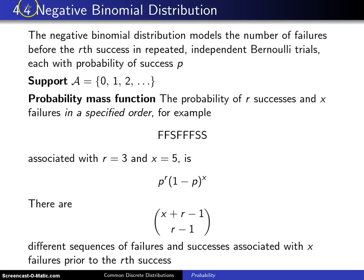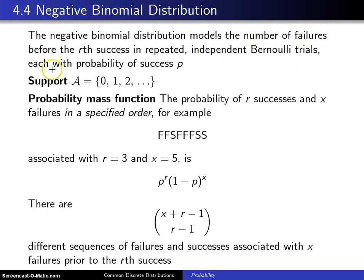Now we're introducing a fourth discrete probability distribution, which comes up in applications quite often — the negative binomial distribution. The negative binomial distribution models the number of failures before the rth success in repeated independent Bernoulli trials, each with probability of success p.